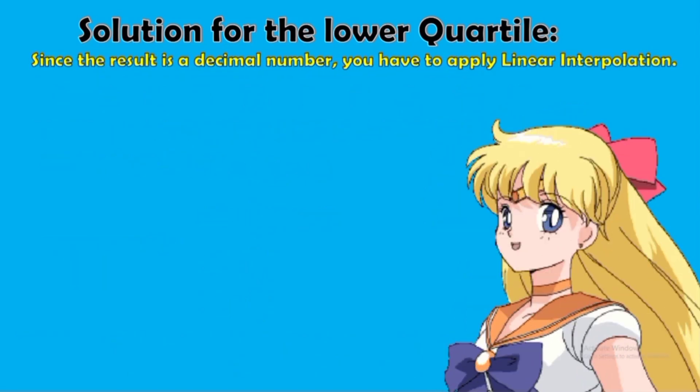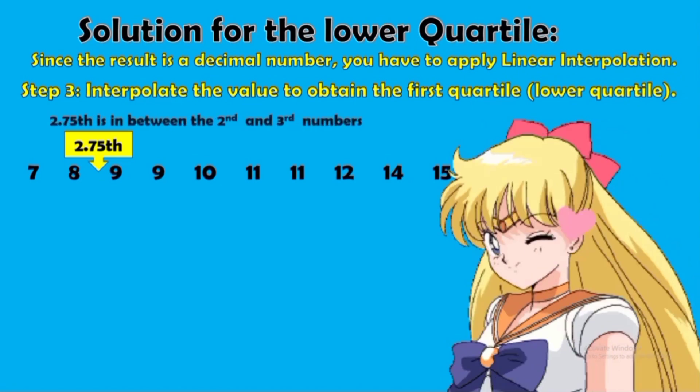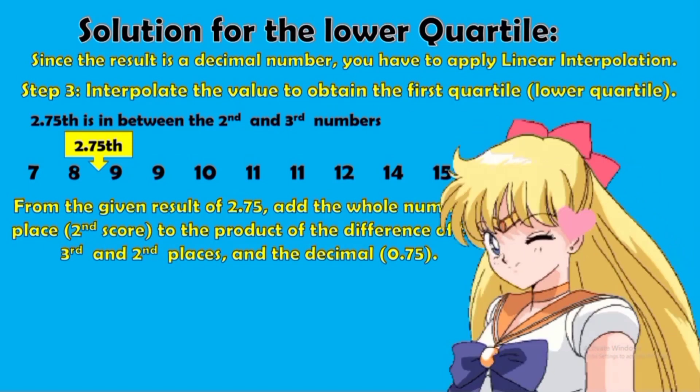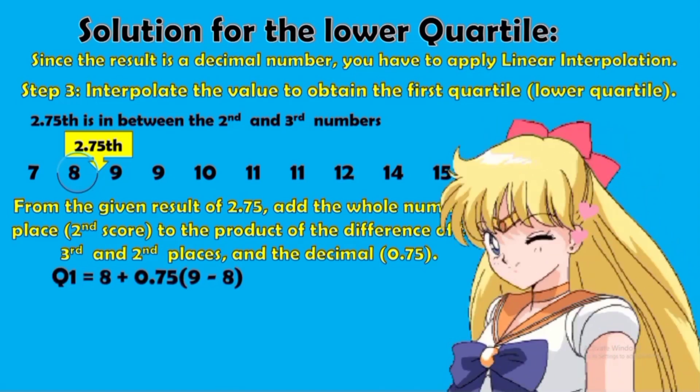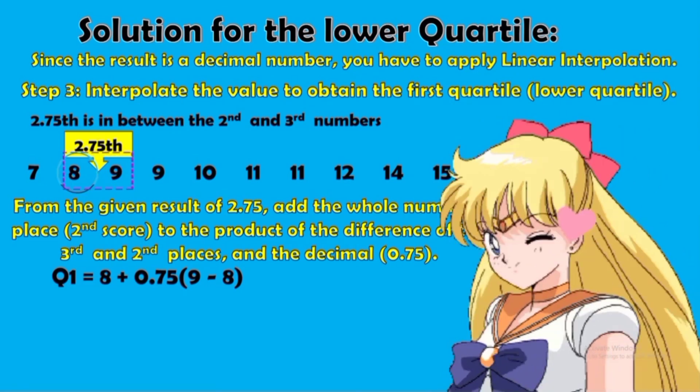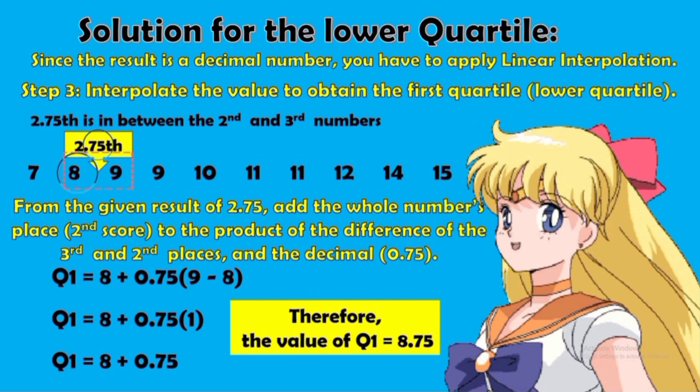Since the result is a decimal number, you have to apply linear interpolation. Step 3: Interpolate the value to obtain the first quartile or the lower quartile. Here is our arranged given data. Between 8 and 9 is our 2.75 place. 2.75 is in between the second and the third numbers. From the given result of 2.75, add the whole numbers place, or the second score, to the product of the difference of the third and the second places, and the decimal number, which is 0.75. First, subtract 8 from 9. That is 1. Then, multiply. Then, add. Therefore, the value of the first quartile is 8.75.